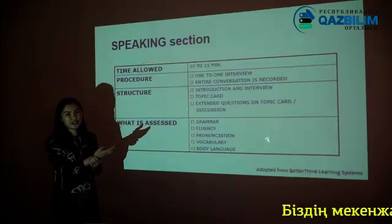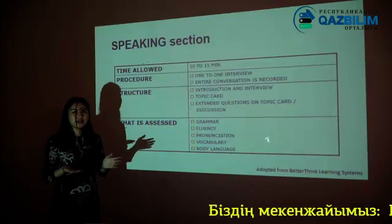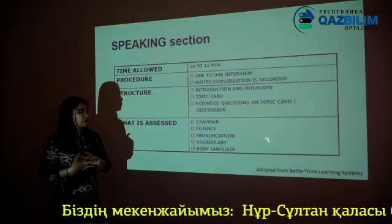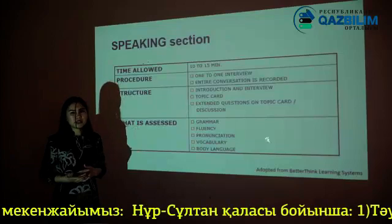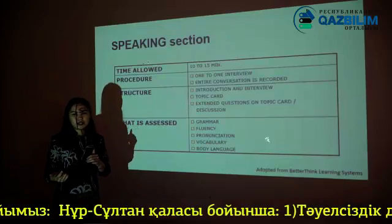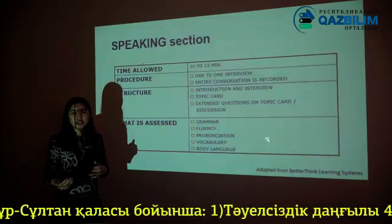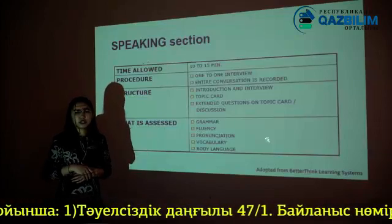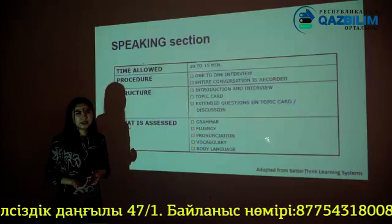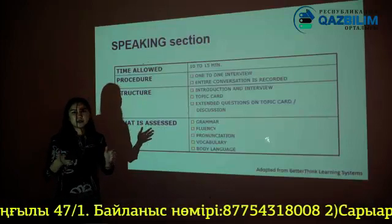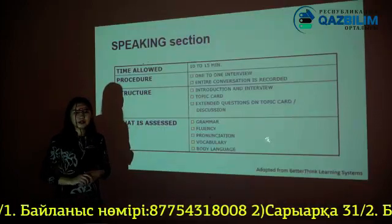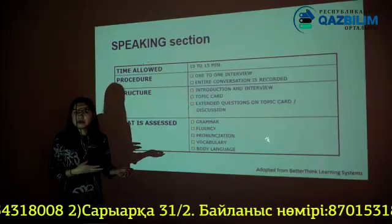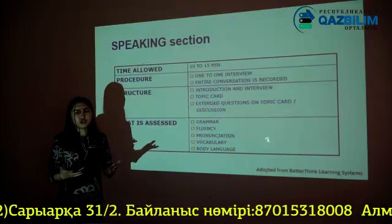Let's start with the speaking section. Speaking will take 10 to 15 minutes, depending on your situation and circumstances. The procedure is a one-to-one conversation with an IELTS examiner, and the entire conversation will be recorded in order to evaluate your speaking. IELTS speaking consists of three parts. The first part has simple questions about you — your family, school, neighborhood, and job.